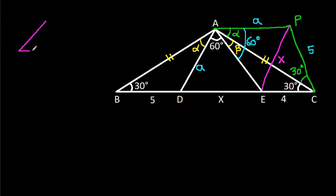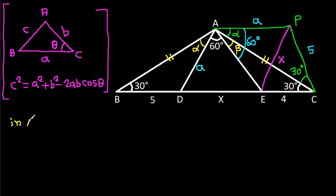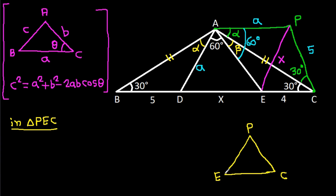Now in any triangle ABC, if this angle is theta, BC is 'a', AC is 'b', and AB is 'c', then c² equals a² plus b² minus 2ab·cosθ. Here, in triangle PEC: PE is X, PC is 5, CE is 4, and this angle is 30 plus 30, which equals 60 degrees.